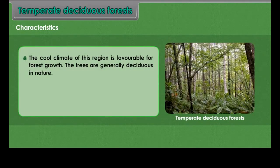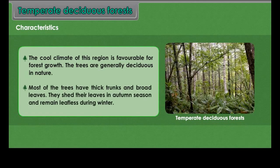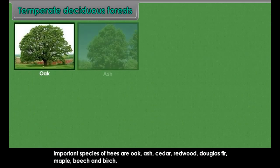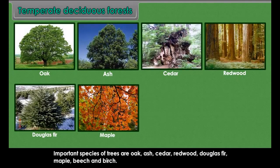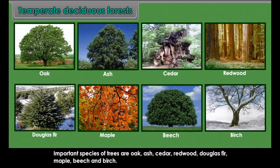Characteristics. The cool climate of this region is favourable for forest growth. The trees are generally deciduous in nature. Most of the trees have thick trunks and broad leaves. They shed their leaves in autumn season and remain leafless during winter. Important species of trees are oak, ash, cedar, redwood, Douglas fir, maple, beech and birch.